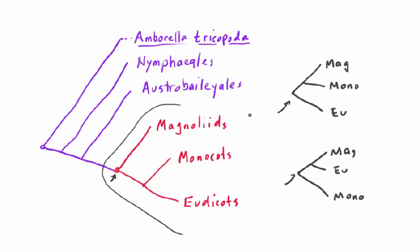The third possibility is the tree that I've actually put up here, which happens to be the one most well-supported by the best available data, and this is why we're going to be going with this tree. At this point, it seems very unlikely that the topology of this tree is going to be changing much in the future.